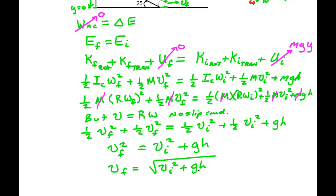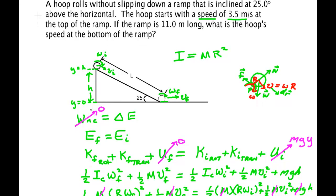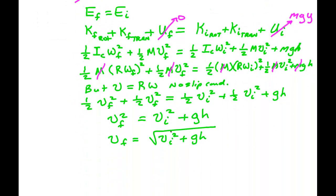Now for H, I wasn't given H, but I was given the length L here, which is the hypotenuse and H is the opposite side. So I can use the trig function, the sine to replace the H. V_F is the square root of V_I squared plus G times L times sine of theta. So now I just need to find some numbers from the problem and use my calculator.